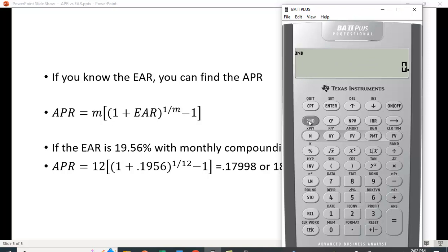You can also use the ICONV function. I'll scroll down and say I know the effective rate is 19.56. You have to hit enter to make sure you see that equal sign. I need to know the number of periods—this was monthly compounding—so hit enter again. When I see nominal, I'll just hit compute, and we get the same answer.